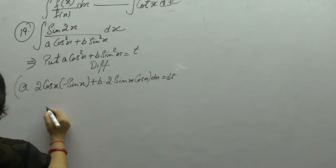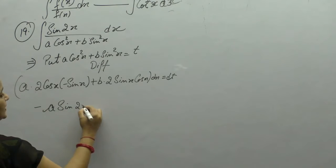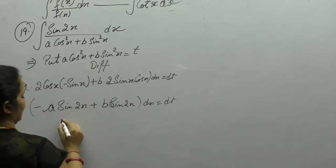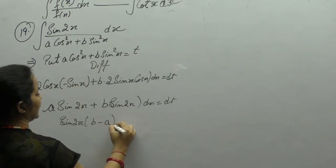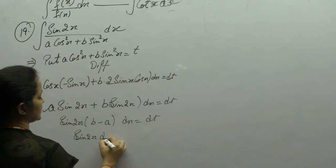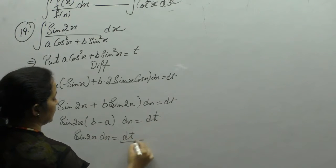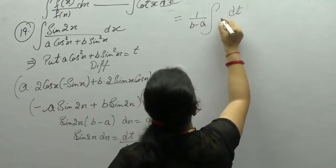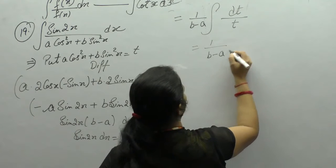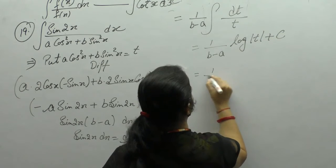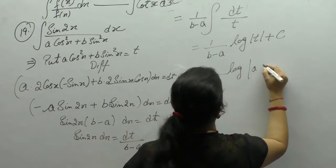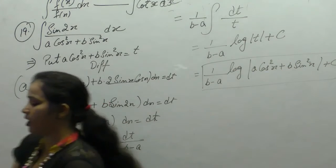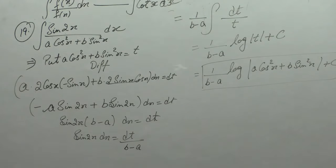Now, 2sinx·cosx = sin2x, so −a·sin2x + b·sin2x dx = dt. Taking sin2x common: (b − a)·sin2x dx = dt, so sin2x dx = dt/(b − a). The integral becomes (1/(b−a))·integral of 1/t dt = (1/(b−a))·log(t) + c. Substituting back: (1/(b−a))·log(a·cos²x + b·sin²x) + c.